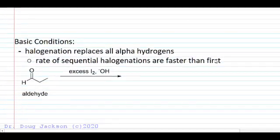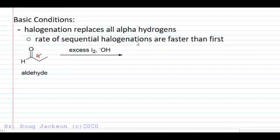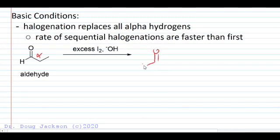If we did want to put more than one on, basic conditions are the way to go. We're going to replace all alpha hydrogens on a carbon, because the rate of sequential halogenations are faster than the first. So we can say two times or excess iodine, whichever we prefer - chlorine or bromine. Excess or two times, because we've got two alpha carbons on this aldehyde. Ultimately that aldehyde gets two iodine molecules for its alpha position. Let's look at the mechanism.